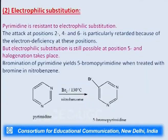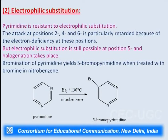Pyrimidine is resistant to electrophilic substitution. Attack at positions 2, 4, and 6 is particularly retarded because of the electron deficiency at those positions. However, electrophilic substitution is possible at position 5, where halogenation takes place, since C5 is relatively electron-rich. Bromination of pyrimidine yields 5-bromopyrimidine when treated with bromine in nitrobenzene at 130°C; the electrophilic substitution takes place at the 5th carbon.